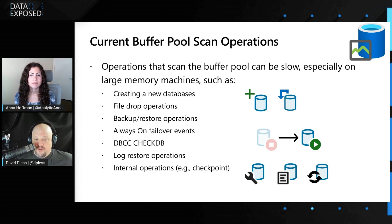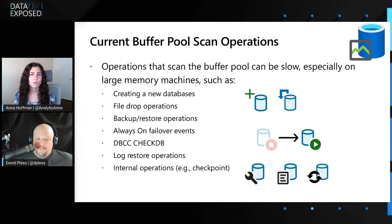Customers on these larger machines, such as systems that have more than a terabyte of memory, may witness these long database creation operations. In some cases it can take several minutes to complete even some of the more basic tasks. Even log restore operations could be slower, and availability group failover operations can be impacted as well. Why on larger machines do we see it to be slow? The reason for this overhead is that scanning the Buffer Pool in SQL Server 2019 and earlier releases is always a serial operation.